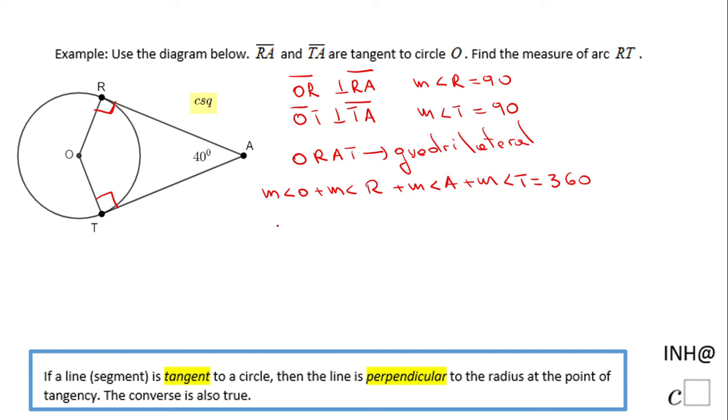The measure of angle O is the one we need to find out. I'm going to call it x to make this problem more algebraic. Angle R is 90 degrees, angle A is 40 degrees, and angle T is also 90 degrees.